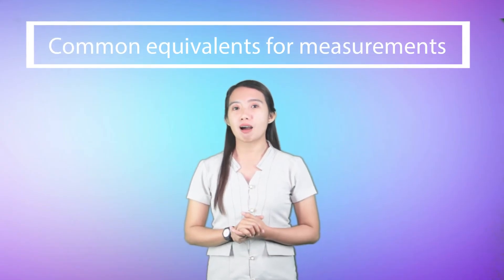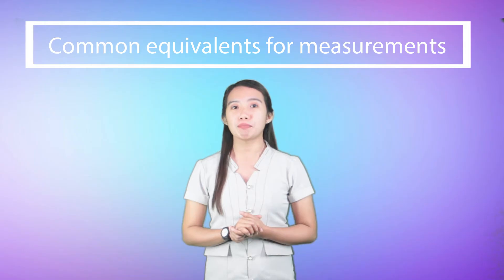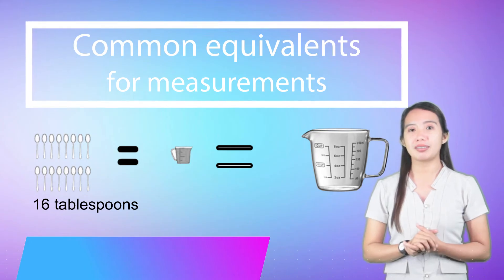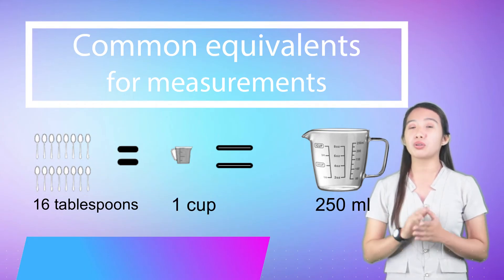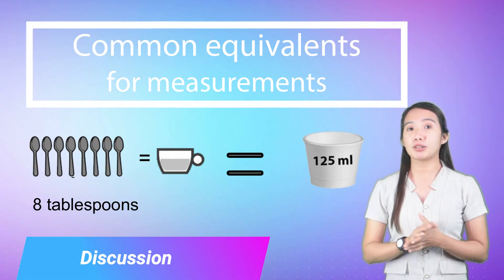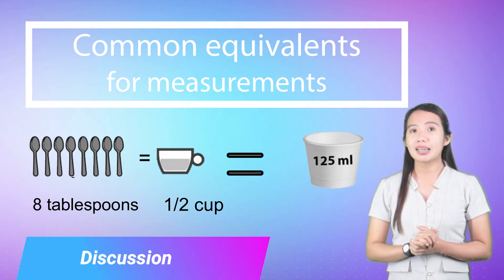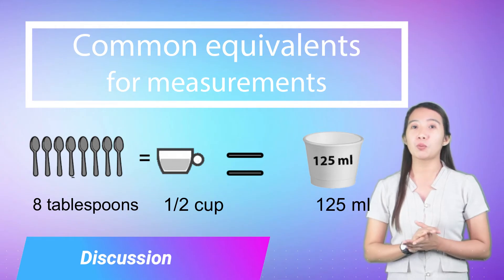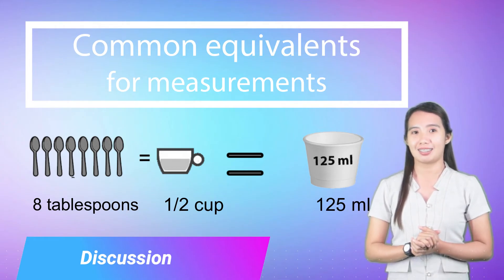At this point, let us be familiar with some of the common equivalents for measurements in cooking. 16 tablespoons is equal to 1 cup and is also equal to 250 milliliters. 8 tablespoons is equal to 1/2 cup and is also equal to 125 milliliters.